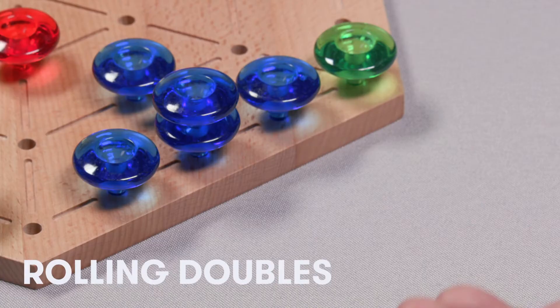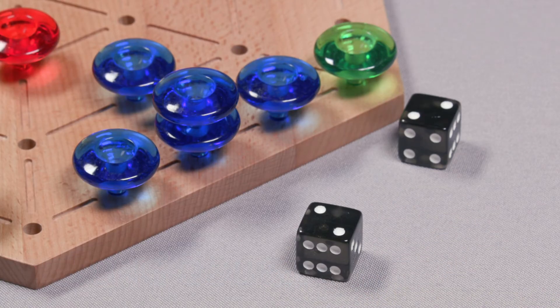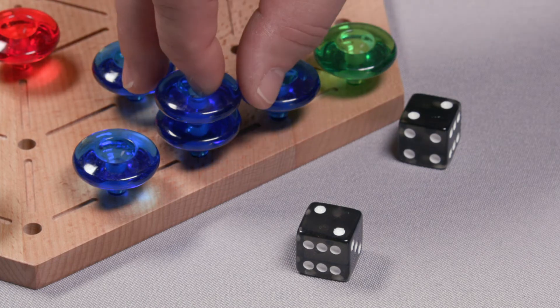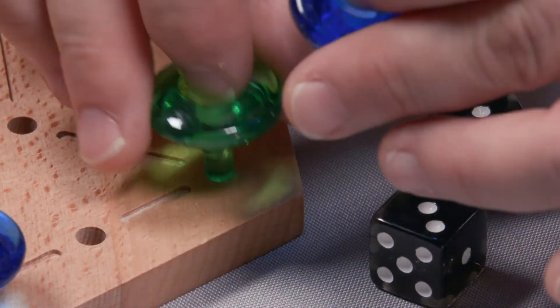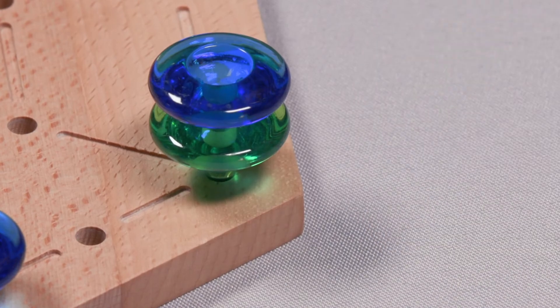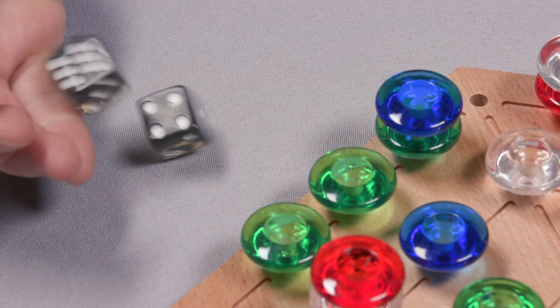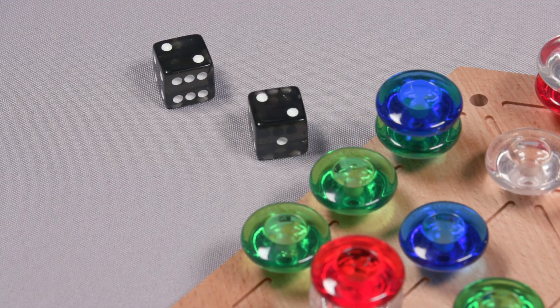If you roll doubles, you get to take your normal turn and then roll again. You may also use doubles to untrap one of your pieces and then roll again. If your luck lasts, there is no limit to the number of doubles you can roll and play during your turn.